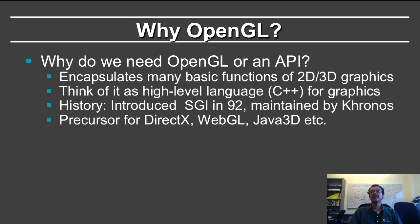So why do we need OpenGL or an API at all? When playing around on home computers, you did graphics in 2D by directly turning pixels on and off—the maximum was drawing circles and rectangles. There are many fundamental concepts in 3D graphics, such as taking a point, transforming it, and displaying it on the screen. This is similar to the way we write high-level programs. In the olden days people programmed in machine code or assembly language, but nowadays we have higher-level languages to encapsulate common operations, make things easier to understand, and make things portable. Essentially, that's what OpenGL is—a high-level language for 3D computer graphics.